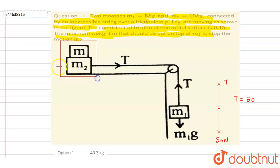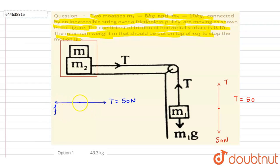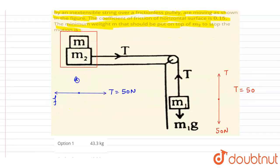Now we don't want these two blocks to move. The tension force we already calculated is 50 newton. The net horizontal force should be zero, so the tension force equals the friction force. Therefore, the friction force must equal 50 newton. This gives us the condition for the system not to accelerate.